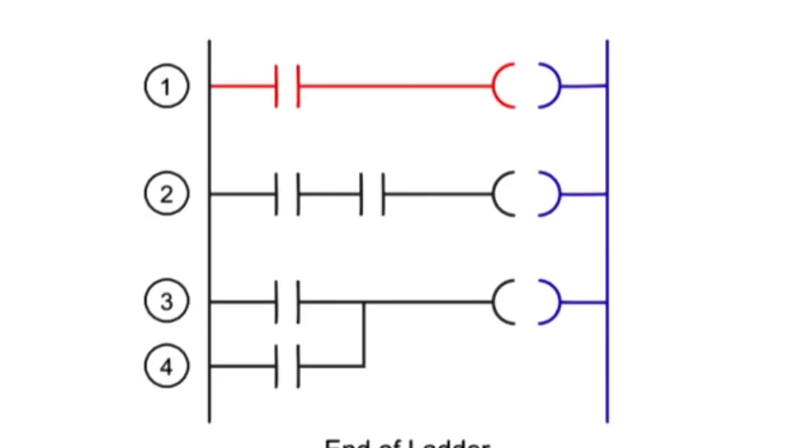The PLC scan follows a specific pattern to execute the program. The first pattern is referenced as Horizontal Scanning, where the program is examined from the first command, left to right across the rung, and top to bottom.